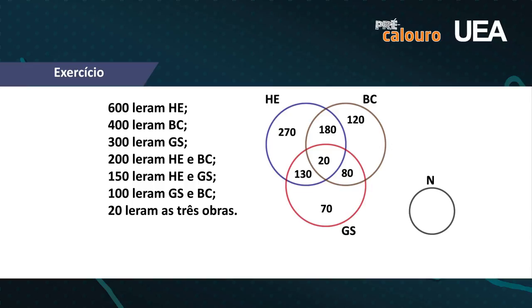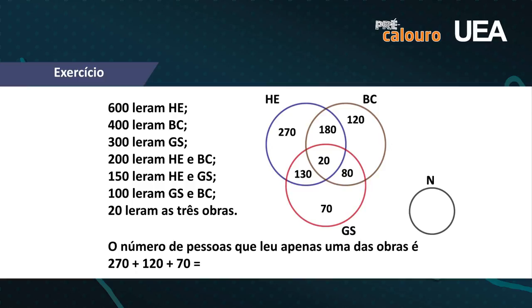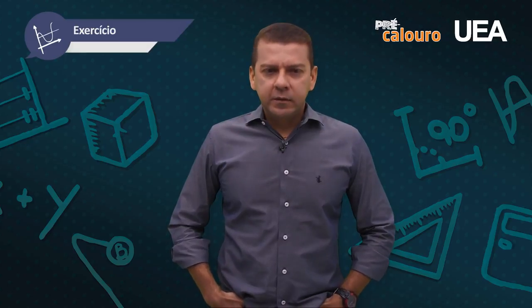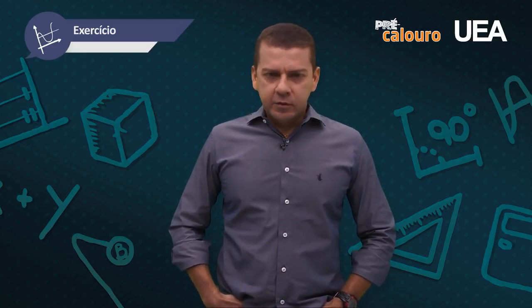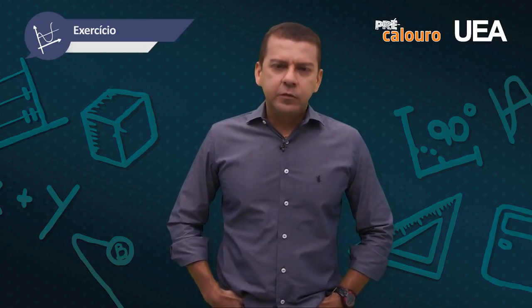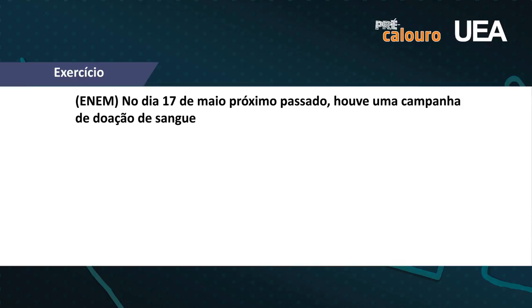O problema pede o número de pessoas que leu apenas uma obra, ou seja, a parte somente de cada conjunto: somente HE = 270, somente BC = 120, somente GS = 70. Somando: 270 + 120 + 70 = 460 pessoas. A resposta é a letra D. Tipo de problema muito comum em vestibular — sempre começar da interseção dos três conjuntos, depois interseção de dois, e por último as bolas individualmente.